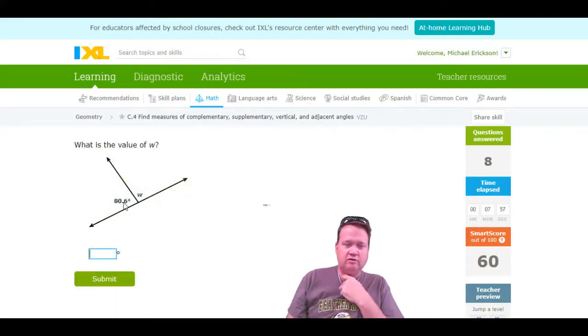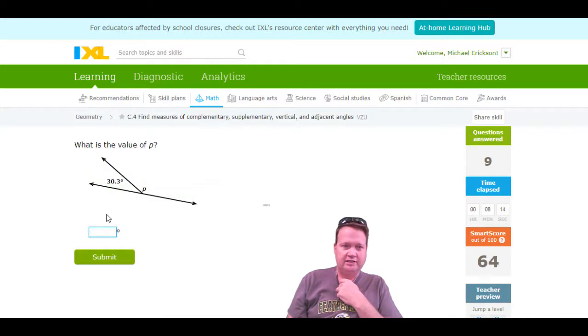And if it's W, well, you can get a calculator out if you want. You can see that this whole thing right here makes a straight line. 180 minus 80.6 is 99.4 degrees. I hope I did the math right. Look at that, we're at 64.